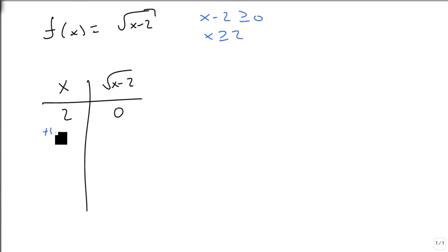We're then going to add 1 to get 2, 3, which gives us 3 minus 2 is 1, square root of 1 is 1. We're then going to add 3 to get 6, square root of 6 minus 2 is square root of 4, which is 2. And then finally, we're going to add 5 to get 11, 11 minus 2 is 9, square root of 9 is 3.